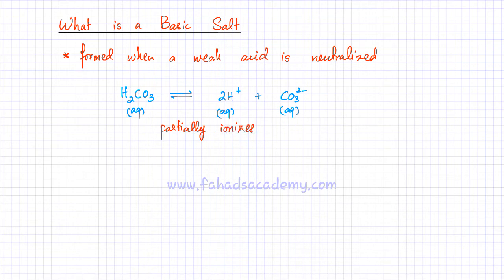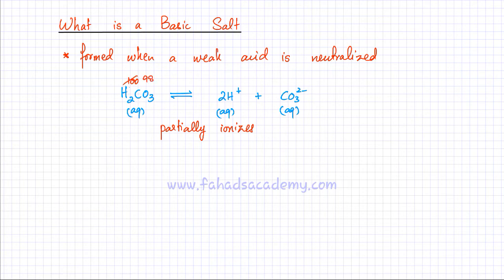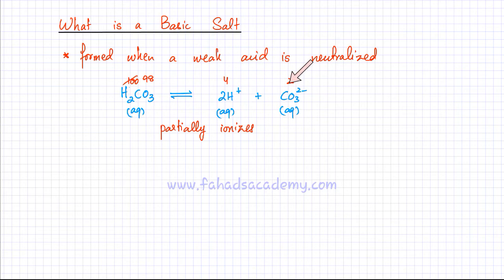What that basically means is that if I have 100 molecules of H₂CO₃, only a few of the molecules are going to break down and produce H⁺ ions. So if out of 100, 98 remain as they are, only one or two break up and produce H⁺ ions — producing just four H⁺ ions and two CO₃²⁻ ions. So compared to the H₂CO₃, very few H⁺ and CO₃²⁻ ions are actually produced. This is what is meant by a weak acid.